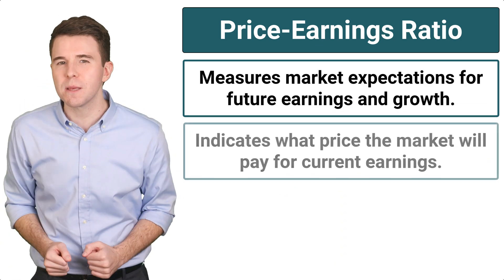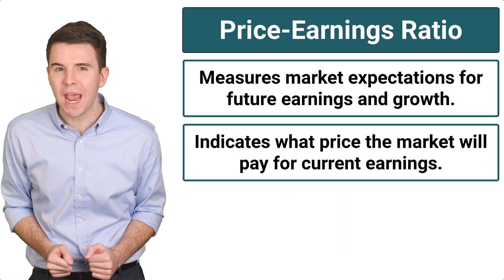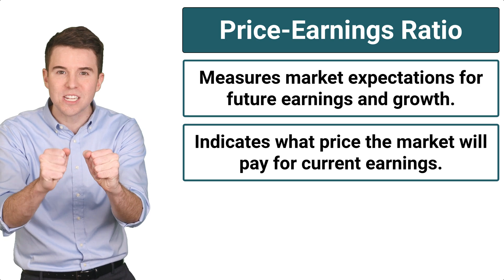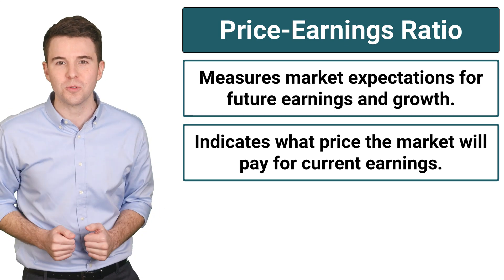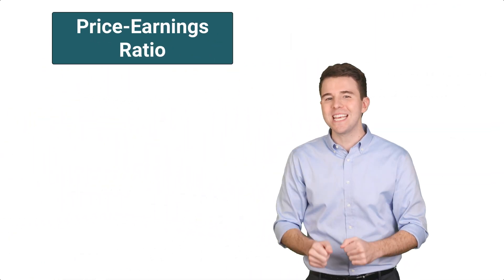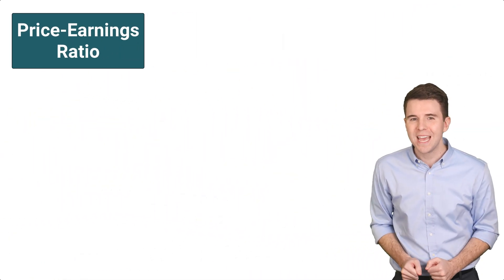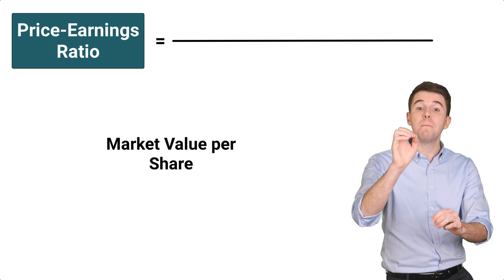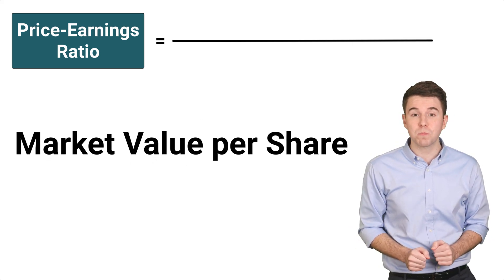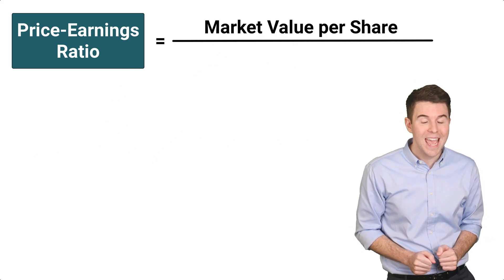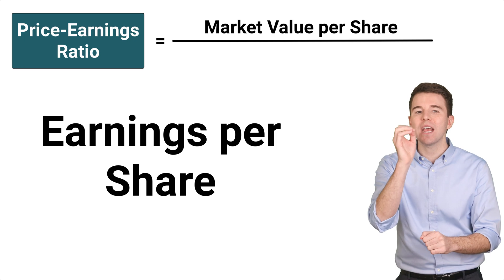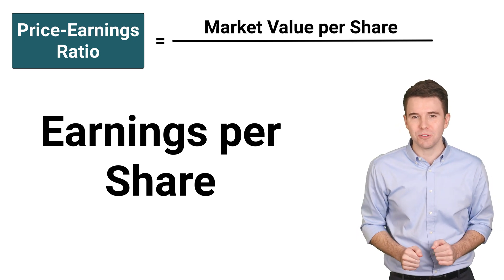It tells us what price the market is willing to pay for a company's current earnings stream. To calculate the PE Ratio, take the market value, or price per share, and divide it by earnings per share.